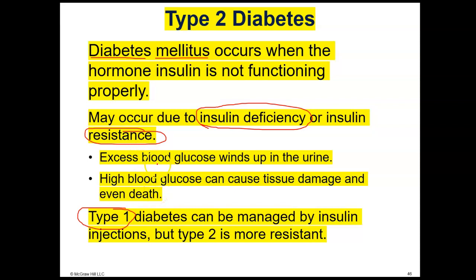Excess blood glucose in either case winds up in the urine. High blood glucose can cause tissue damage like kidney damage, and can lead to ketoacidosis, which can cause death if not treated. Type 1 diabetes can be managed by insulin injection.